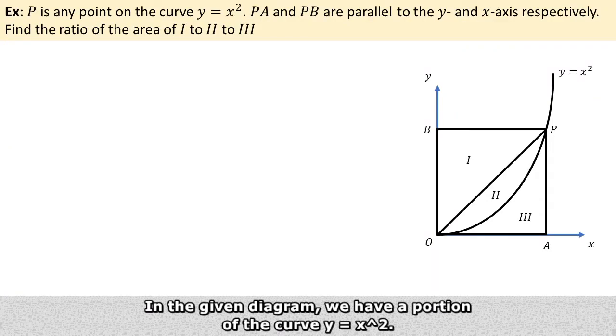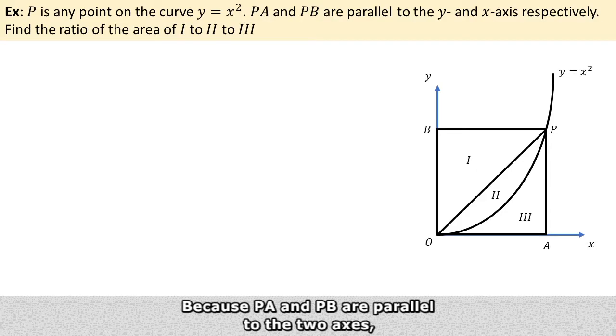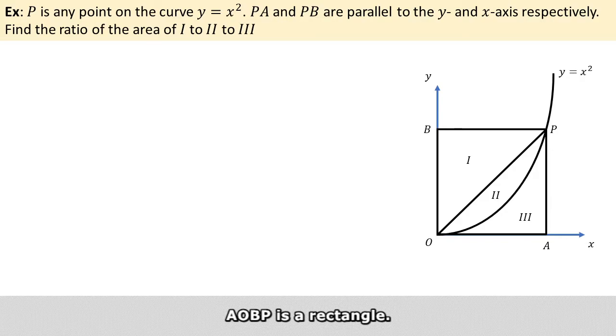In the given diagram, we have a portion of the curve y = x². Because PA and PB are parallel to the two axes, AOBP is a rectangle.